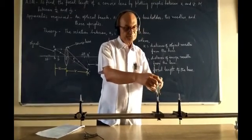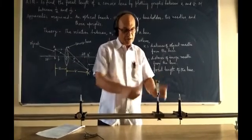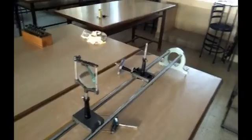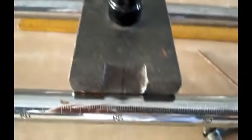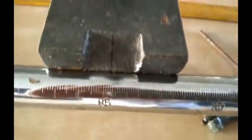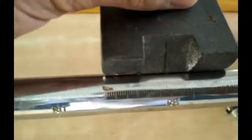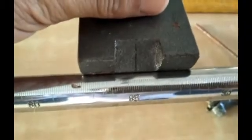Now we find the position of the lens on the optical bench calibration scale — it is near about 85. One important thing: we should keep our eyes parallel to the line of the calibration markings when reading distances, to avoid parallax errors in measurement.